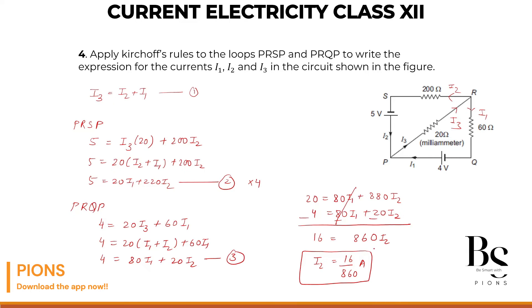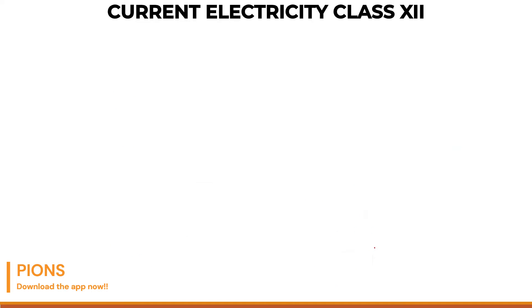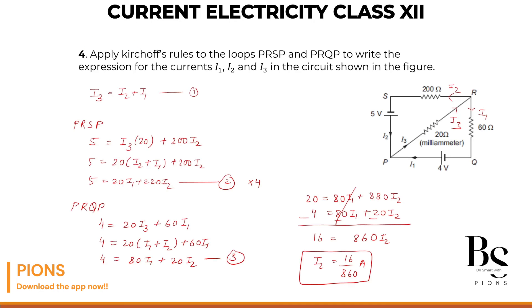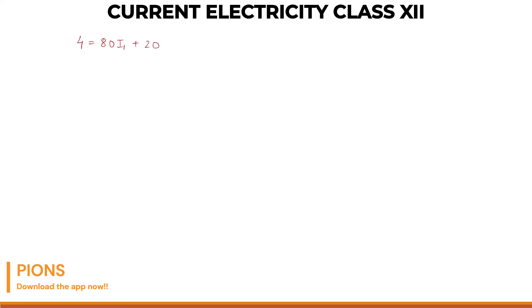Now let's choose any equation. Let me choose the third equation. So 4 equals 80 I1. 4 equals 80 I1 plus how much is it? 20 I2. And what's our value we got for I2? 16 by 860. So 16 by 860 multiplied by 20. We will simplify it within a minute. 80 I1 equals 4. Let's cancel out the 0 with 0. 2.